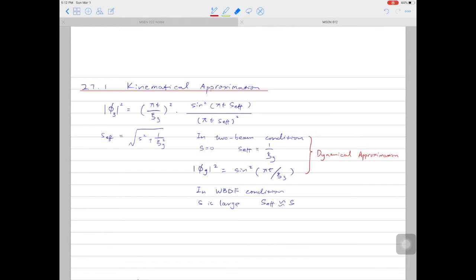In the weak beam dark field condition, we set the excitation error to be large. We'll see why it is large in the next video. Then the effective excitation error can be approximated as the excitation error. In this scenario, the intensity of the diffracted beam is not coupled with the intensity of the direct beam. So we call this kinematical approximation.